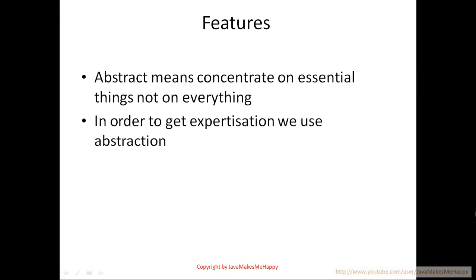The main feature of abstraction in Java is that abstract means to concentrate on essential things, not on everything — we can specify some specific things. For example, if we have to go from place A to place B, and there is another place C, it's not necessary to visit C. Your aim is to move from A to B only, not visit any place in between. You concentrate on specified things, not on everything.